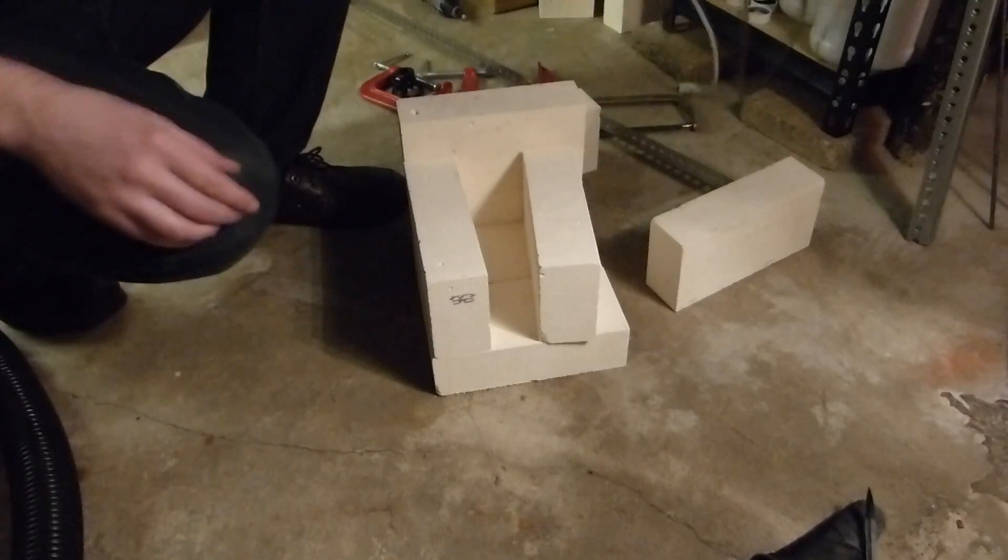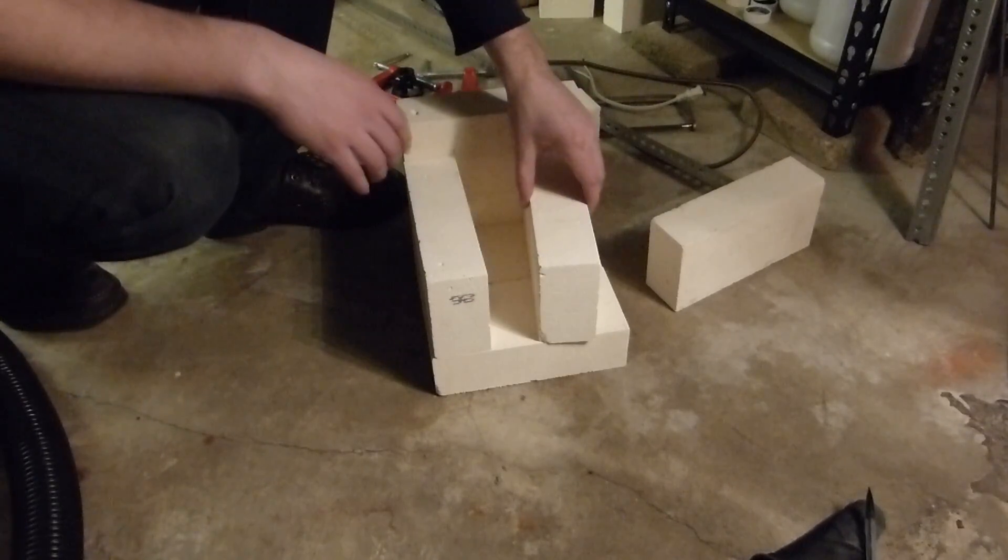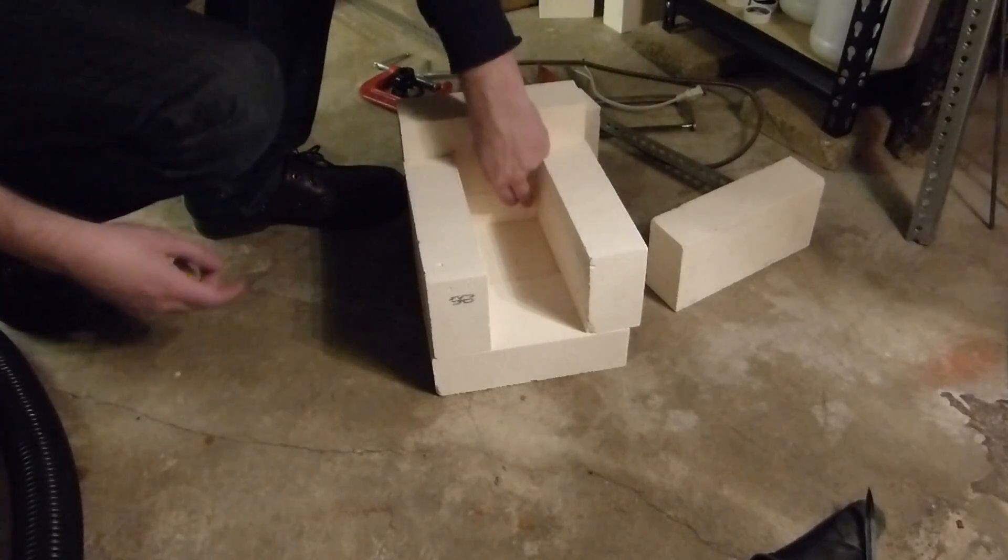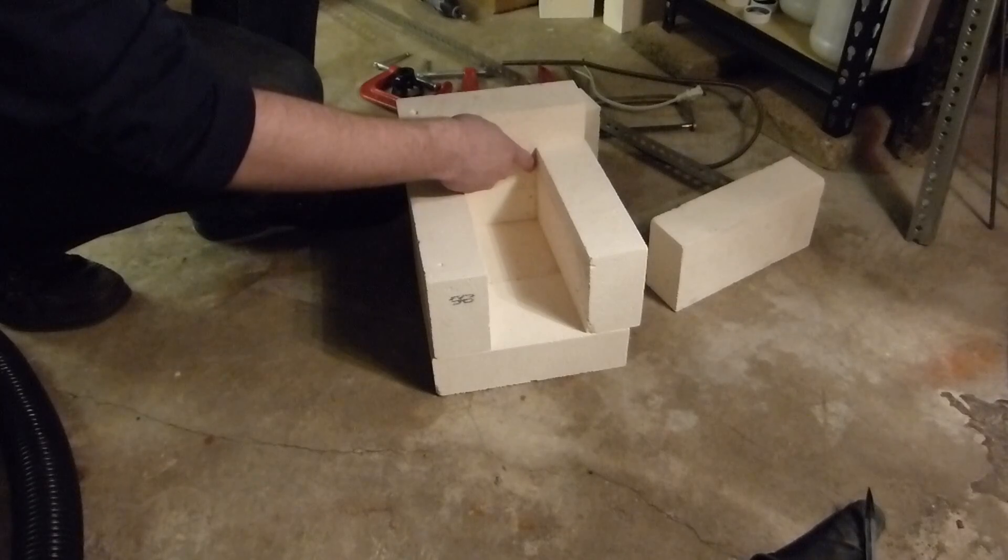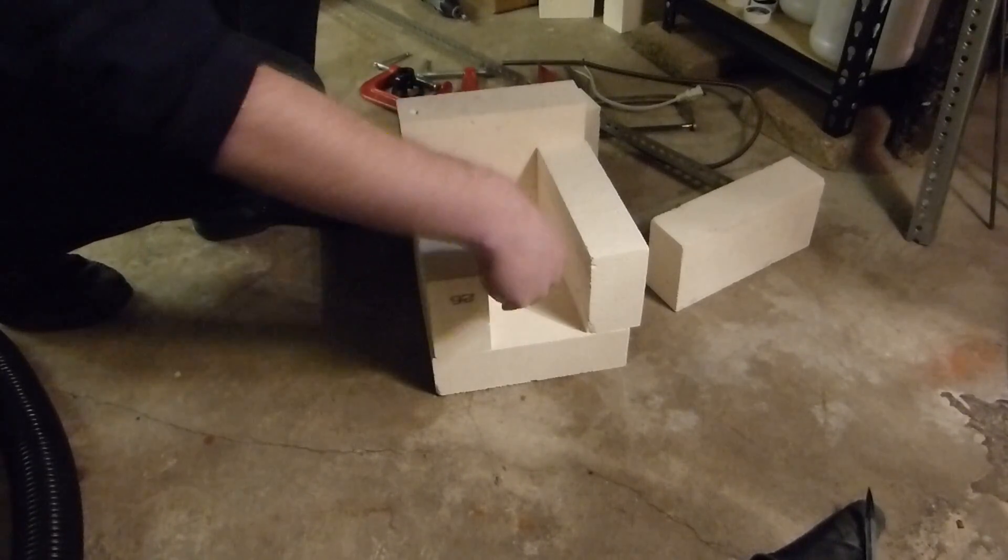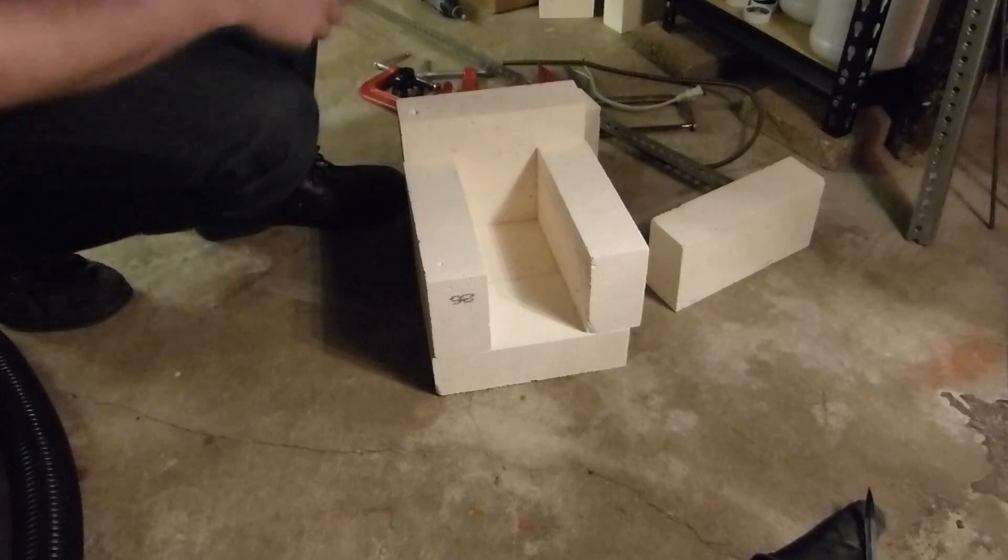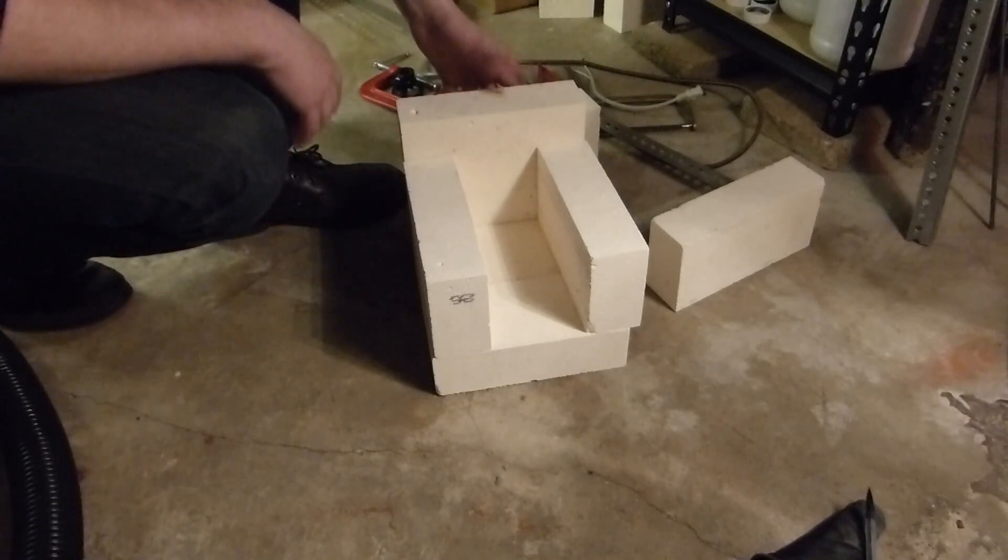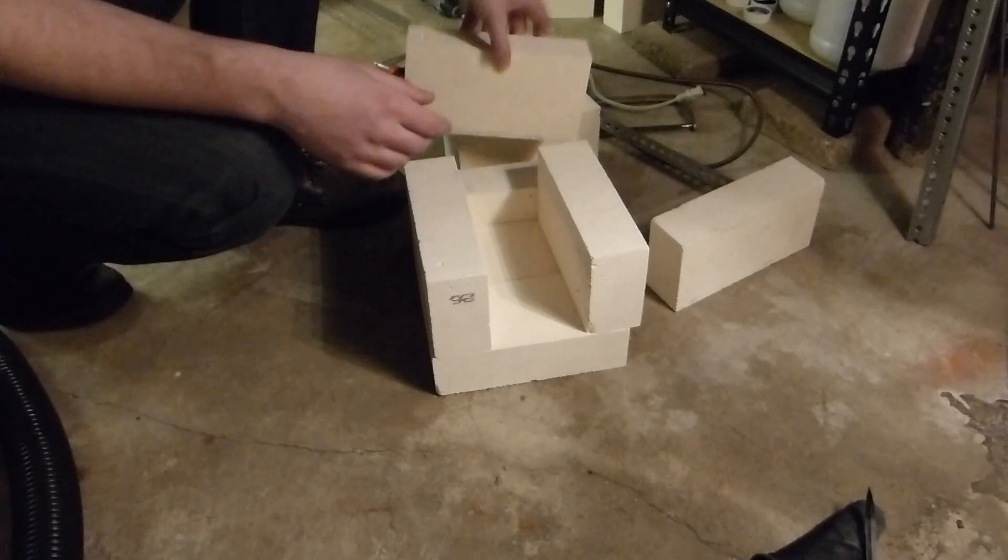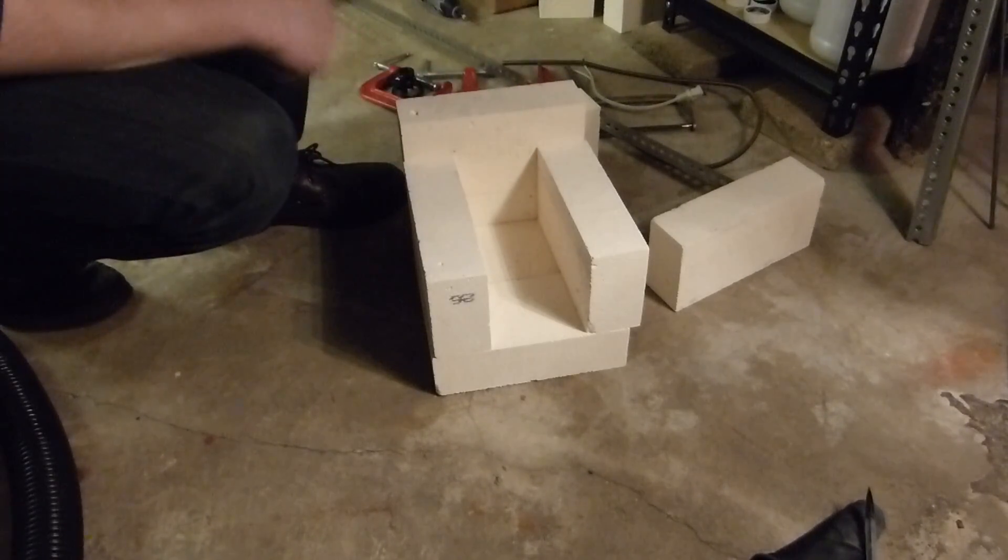I'm essentially going to be routing channels for the nichrome in these bricks, and then there's going to be another channel that's going to basically come in through one side here, go around that channel, and then cut across the back, go around this channel, and then go back through. And then out on the back here, this fire brick will have two holes in it, and on the back will be the terminals so I can connect the power to the heating element.